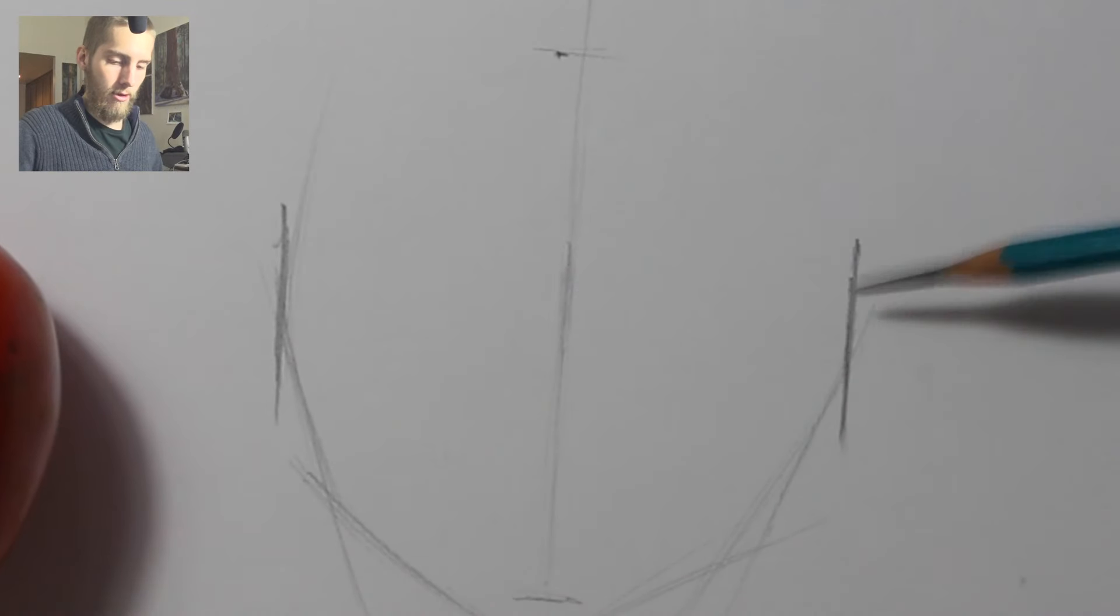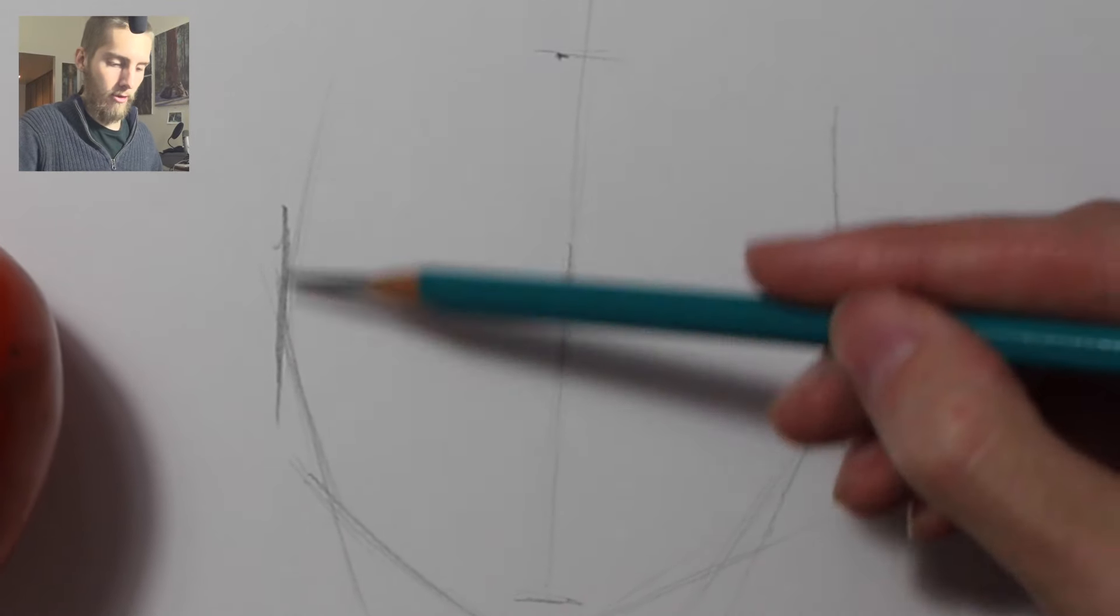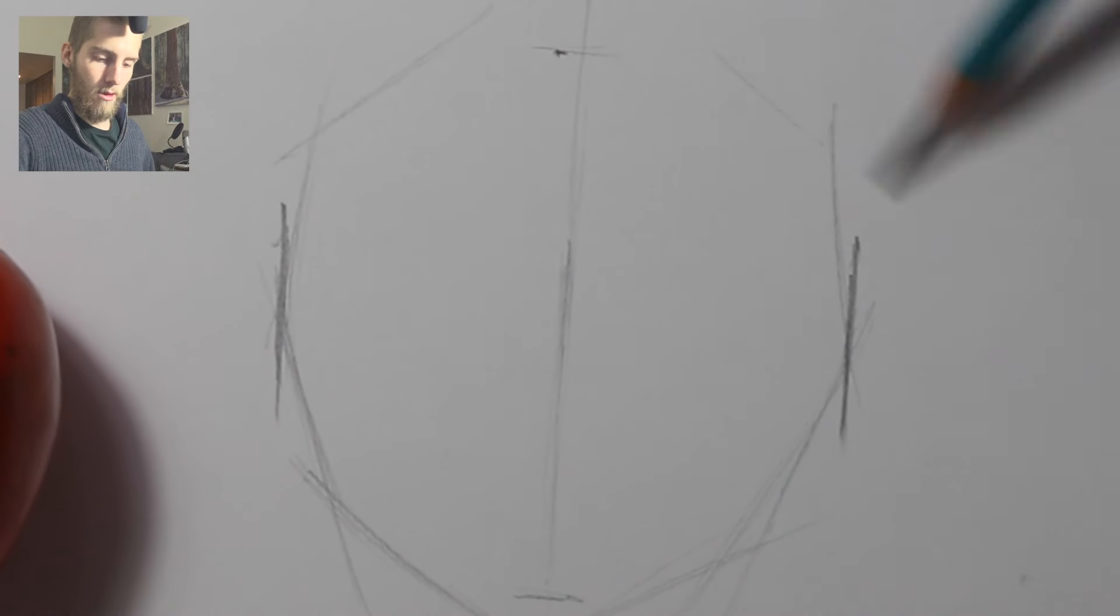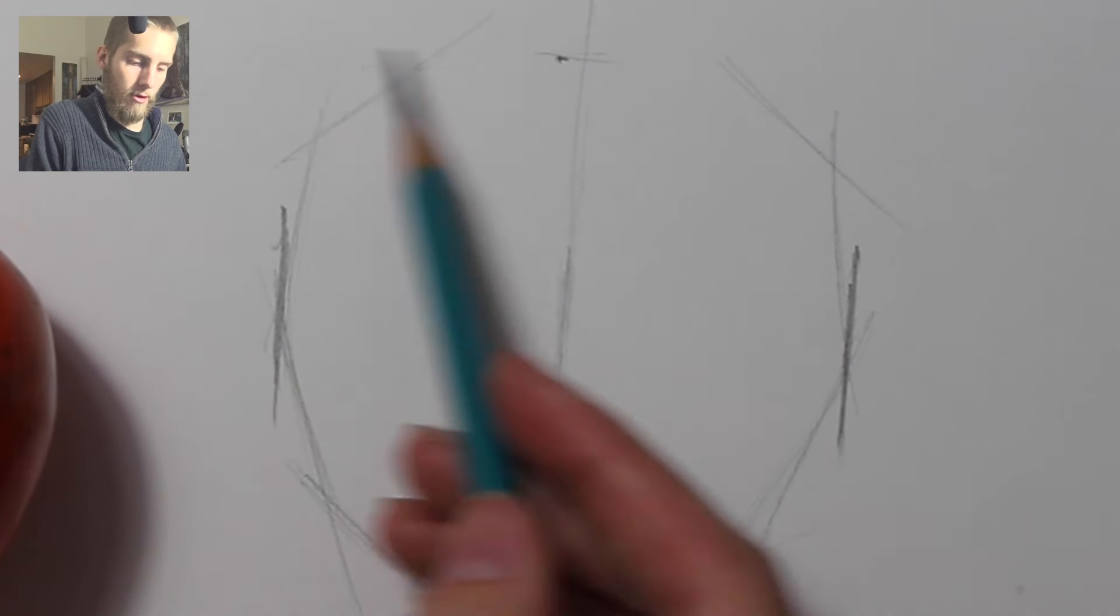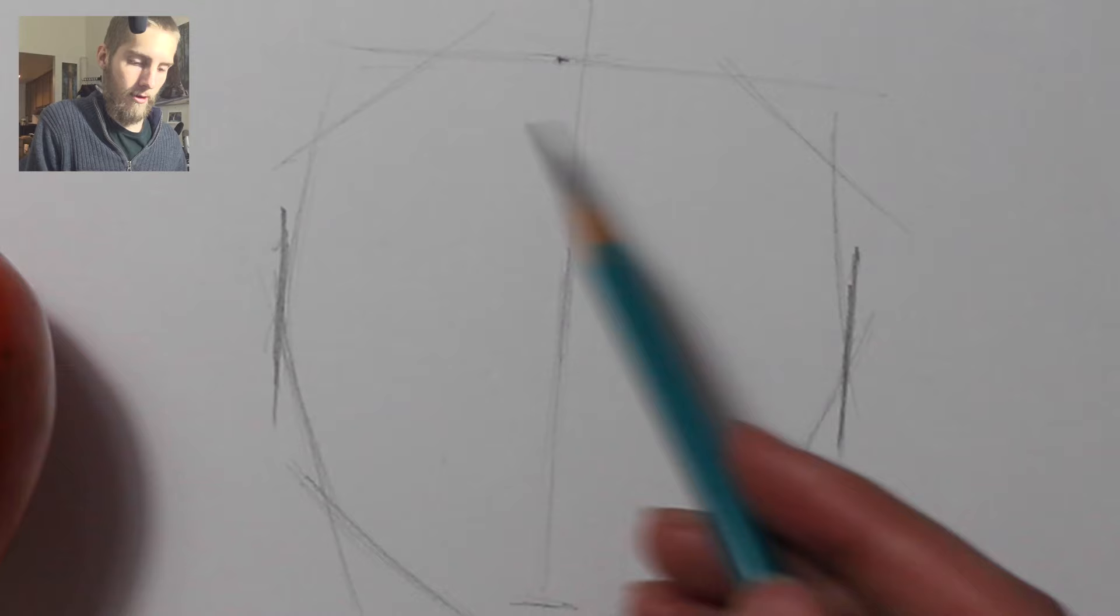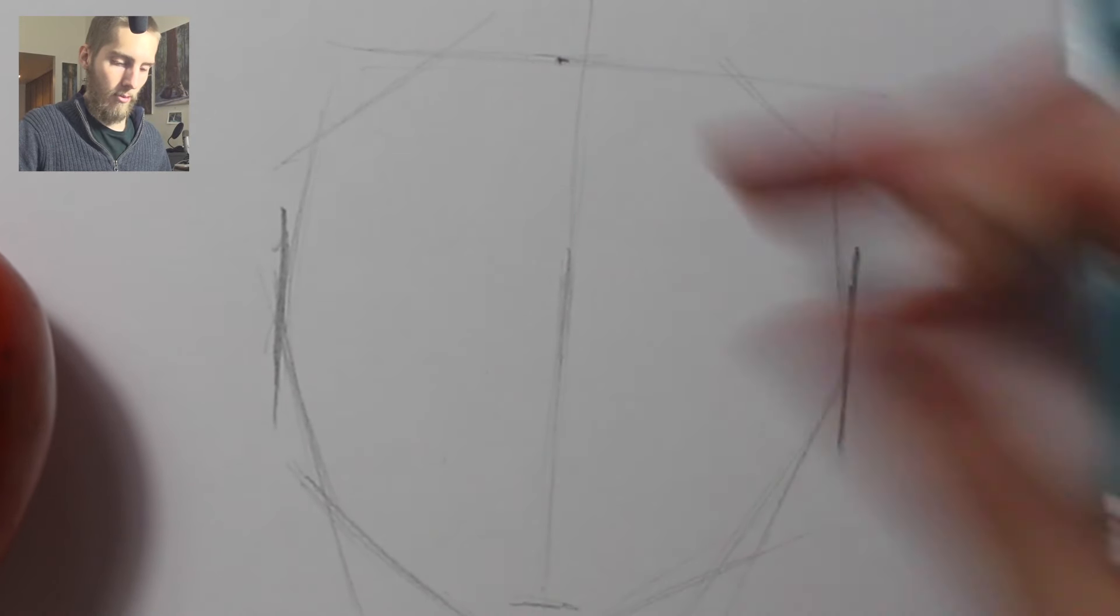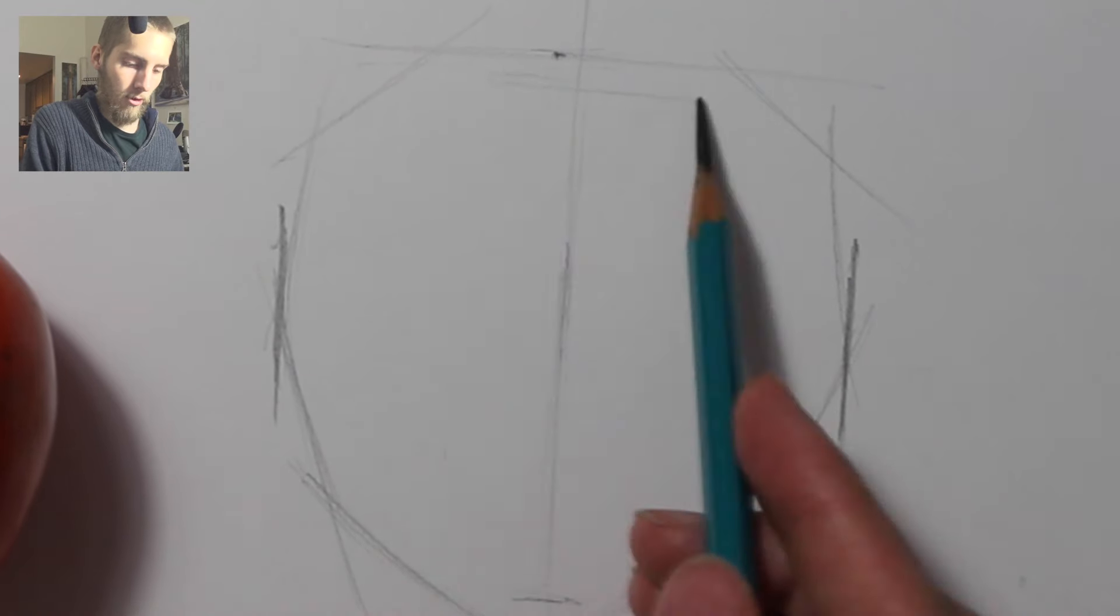As I continue blocking this in, I'm just judging the angles, keeping straight lines. Just guesstimate the top here, because now I know it's definitely larger than those guide marks that I had marked out, a little bit larger.